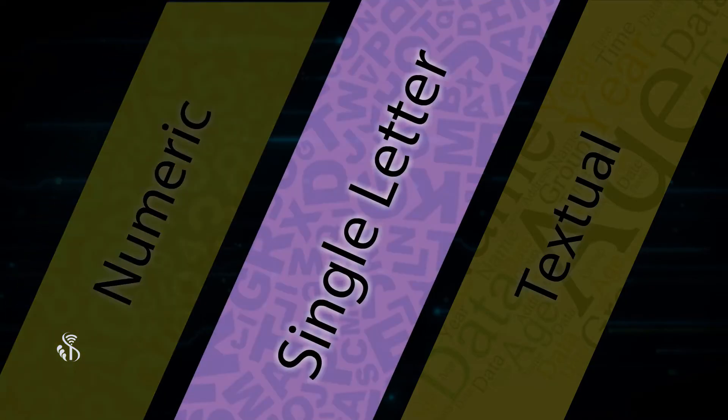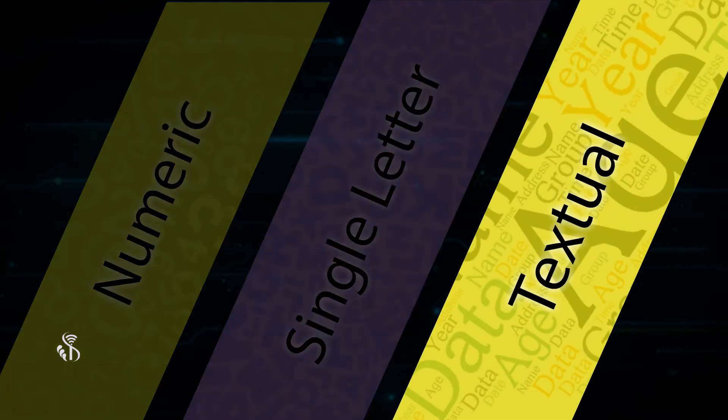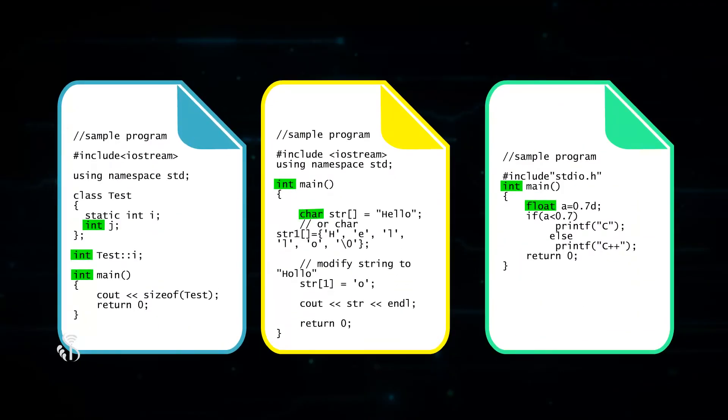It can be single letter, like Y or N as an answer to the question, are you married? It can be textual, like name, address, etc. There are different data types available to store each type of data.